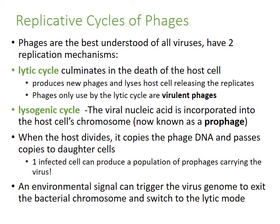The lysogenic cycle is when the viral nucleic acid is actually incorporated into the host cell's chromosome, now known as a prophage. Whenever the host divides, it copies the phage DNA as well and passes those copies onto all the daughter cells. One infected cell can produce a population of prophage-carrying bacteria. When the environment is right, it can trigger the viral genome to exit the bacterial chromosome and switch to the lytic mode.